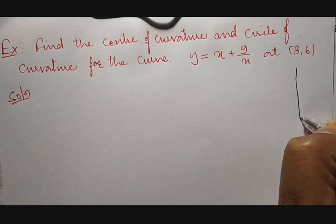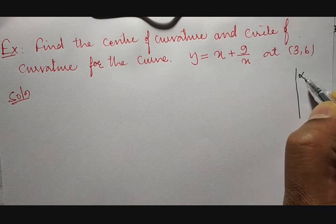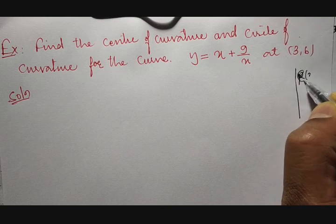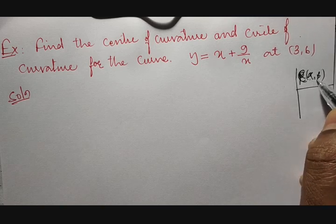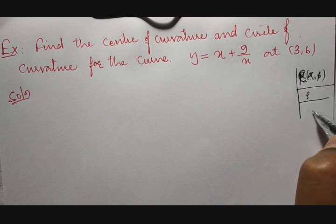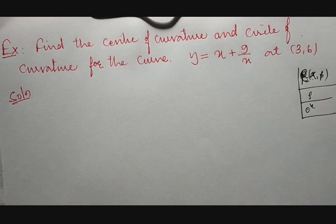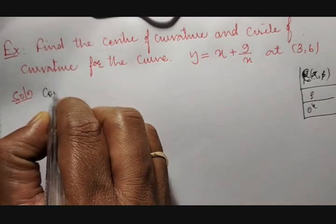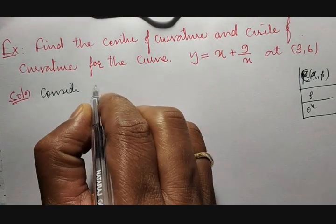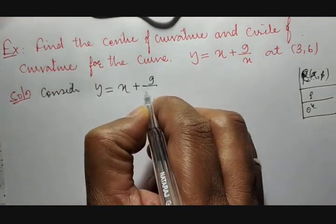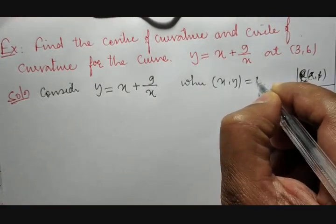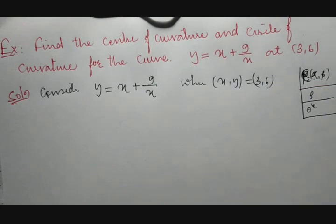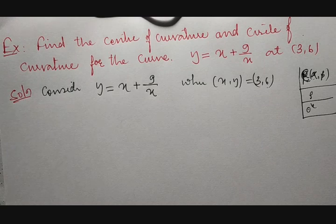First, we need to calculate C(α, β). After getting C(α, β) using the formulas for α and β, we then calculate ρ. After calculating ρ, we go for the circle of curvature. Consider the given example: y = x + 9/x at the point where x = 3 and y = 6. First we need to calculate y₁ and y₂ by differentiating with respect to x.